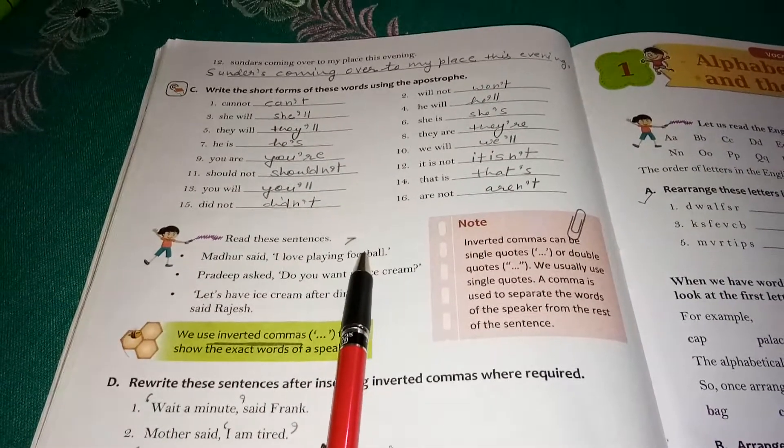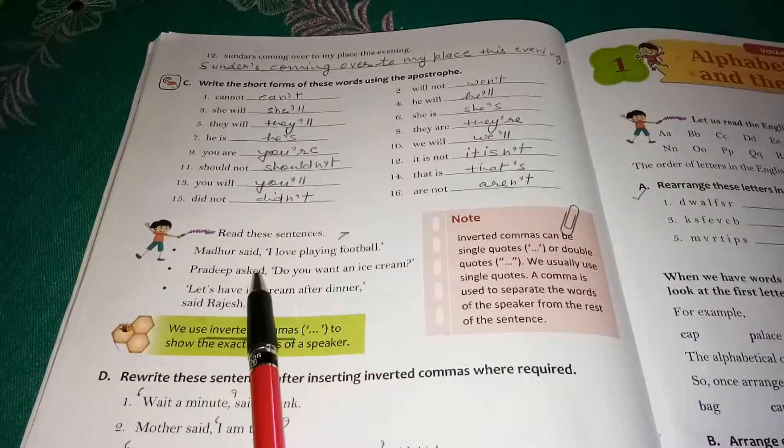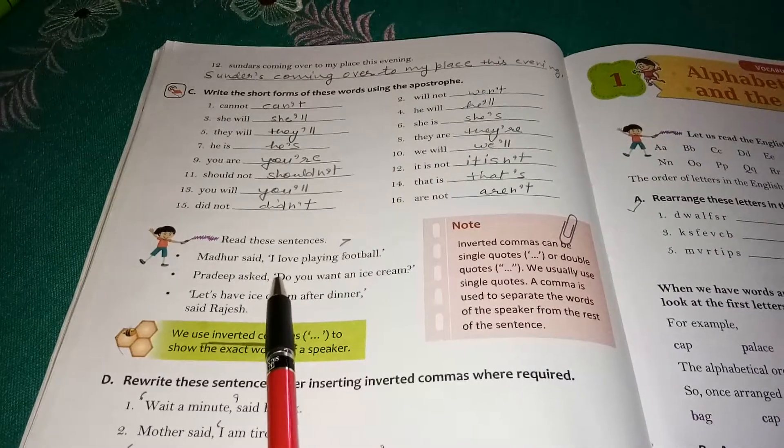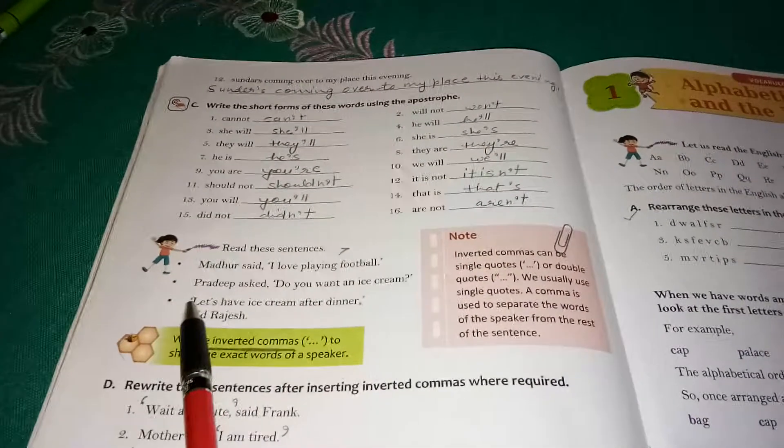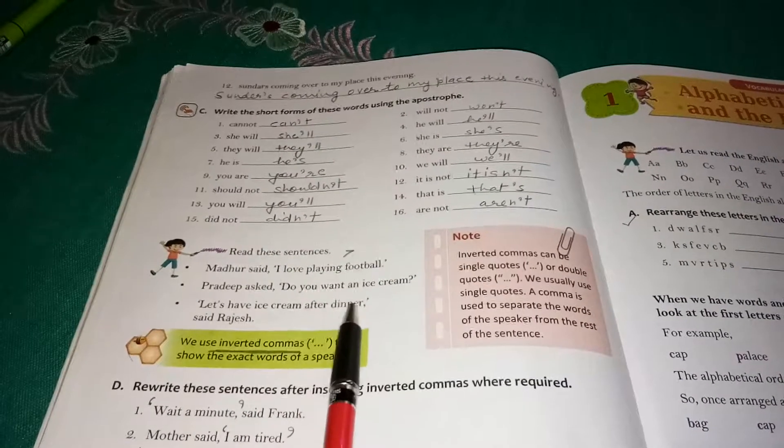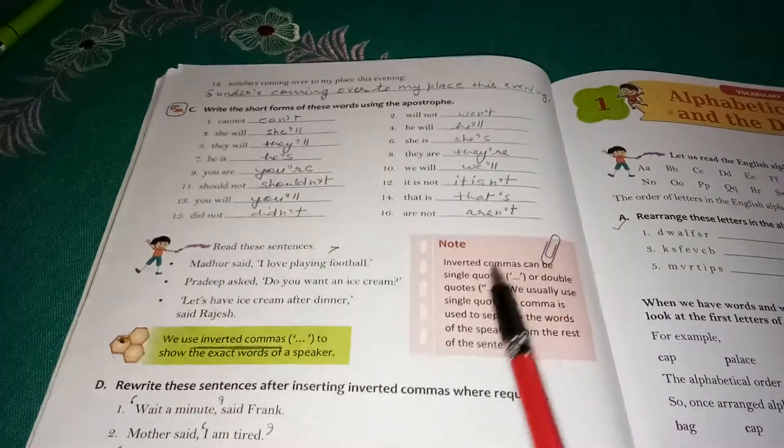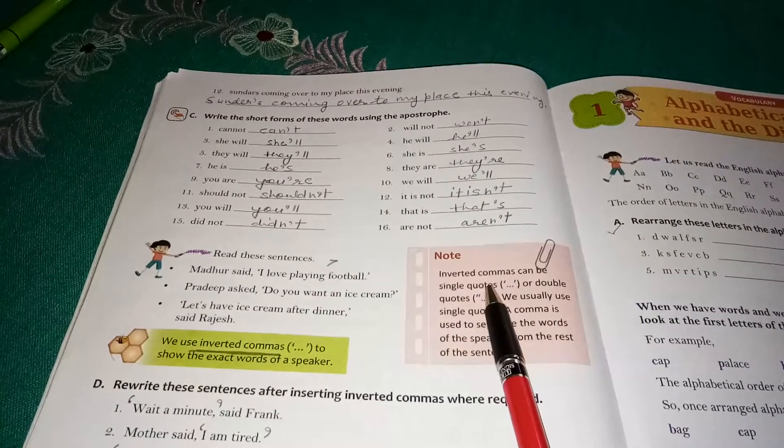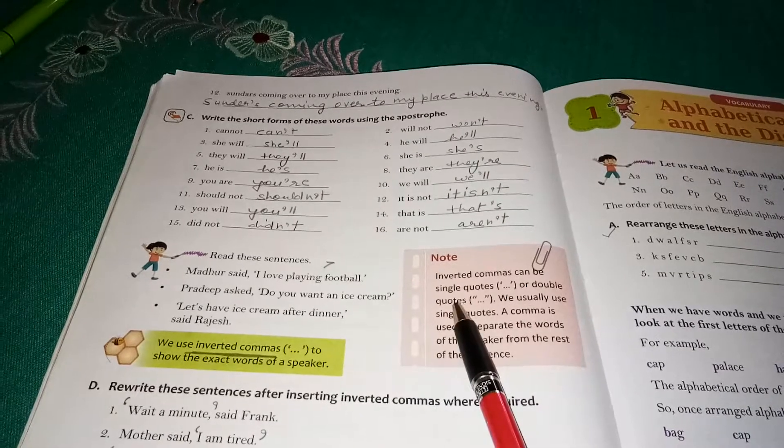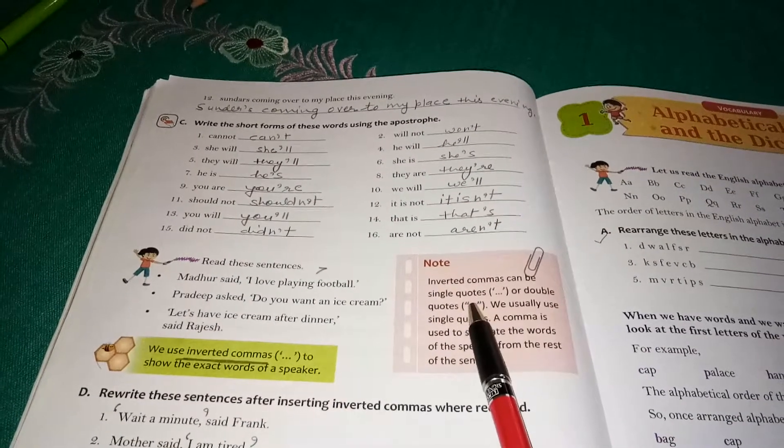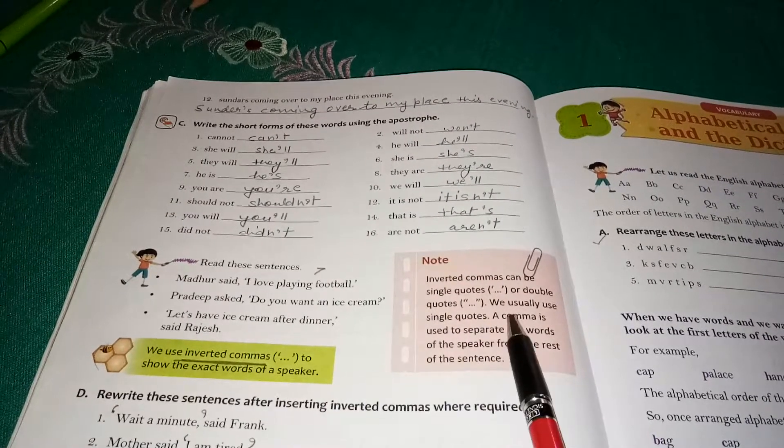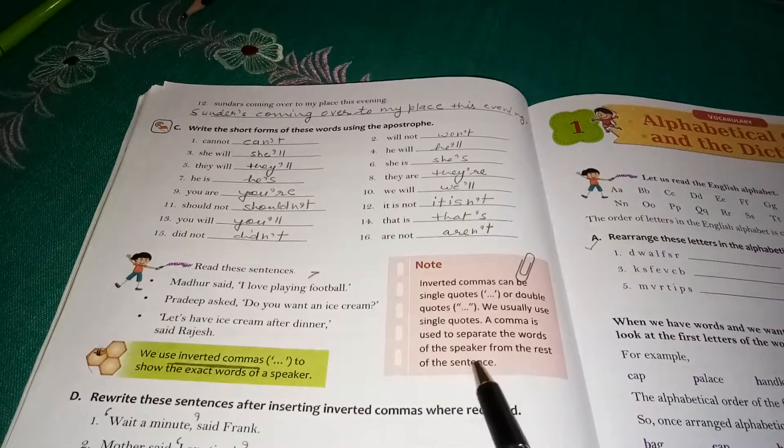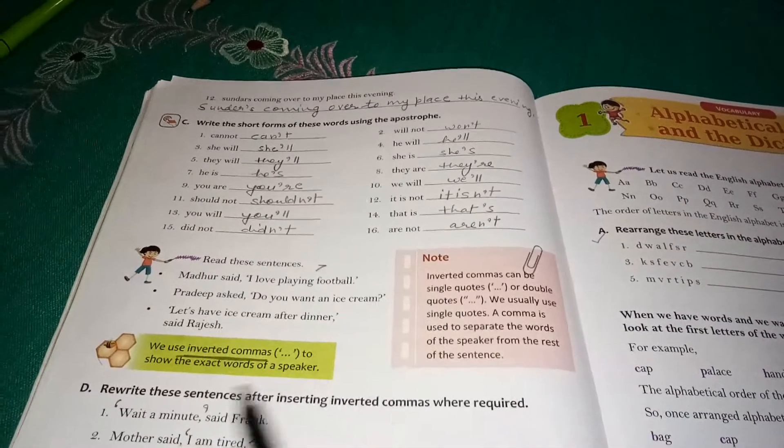Pradeep asked, "Do you want an ice cream?" It is written in quotation mark and the first letter is always capital. "Let us have ice cream after dinner," said Rajesh. Note: inverted commas can be single quotes or double quotes. You can see in the picture, single quote, double quote. We usually use single quotes. A comma is used to separate the words of the speaker from the rest of the sentence.